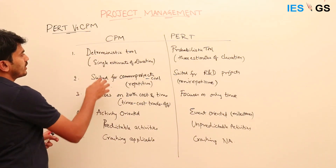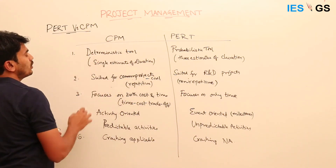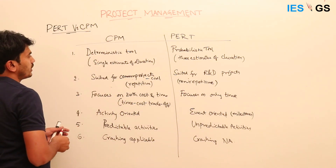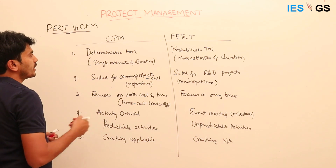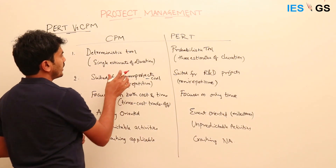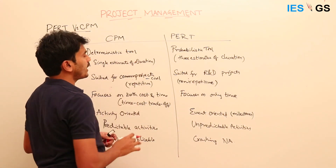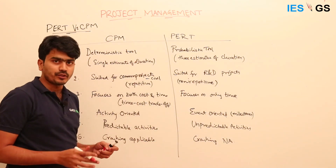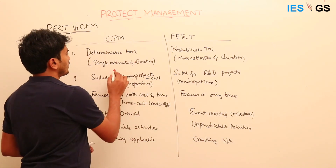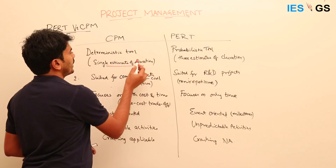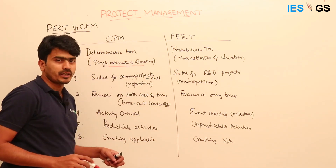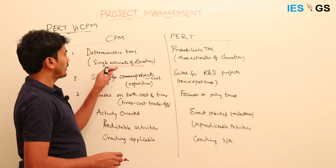CPM is a deterministic tool in the sense that it uses a deterministic value for the activity duration — a single estimate, a known estimate.